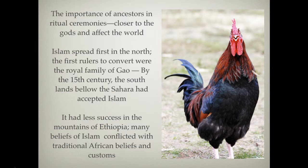Islam really spread through the northern region. The first rulers to convert were the royal family of Gao. By the 15th century, some of the southern lands below the Sahara began to accept Islam, but for the most part it was a slow process. It had less success in the mountains of Ethiopia, particularly because there is a deep Christian tradition on the eastern coast. Many beliefs in Islam also conflicted with traditional African beliefs and customs.